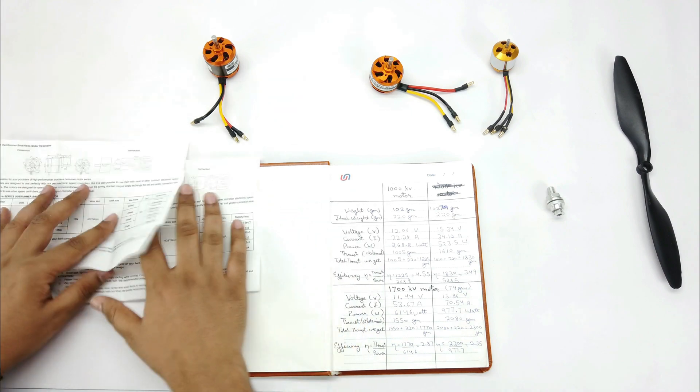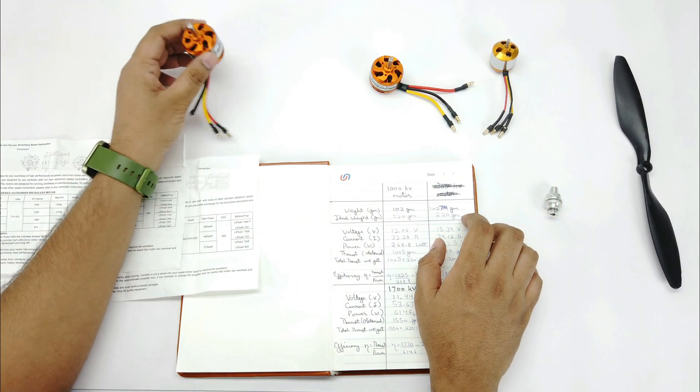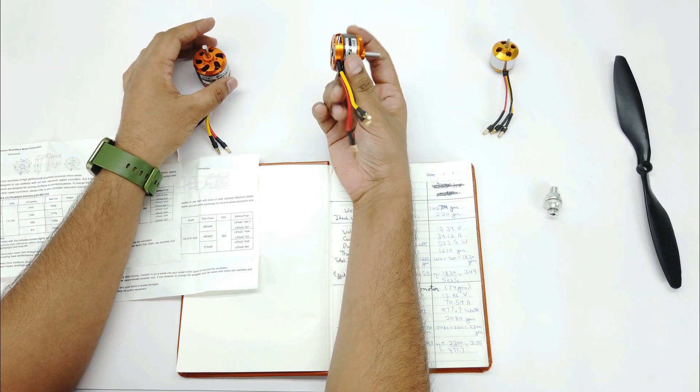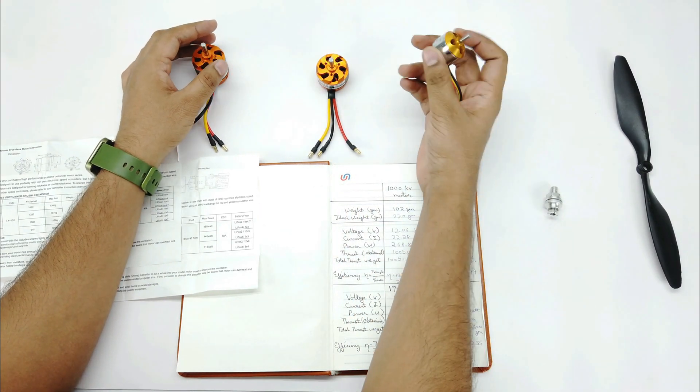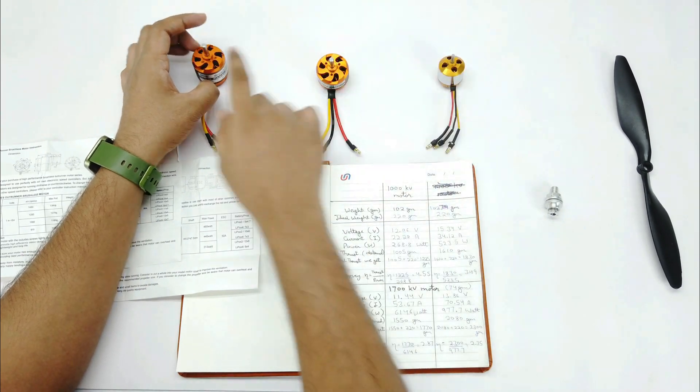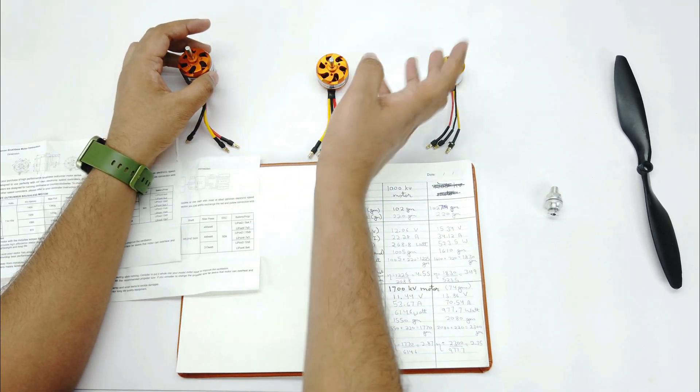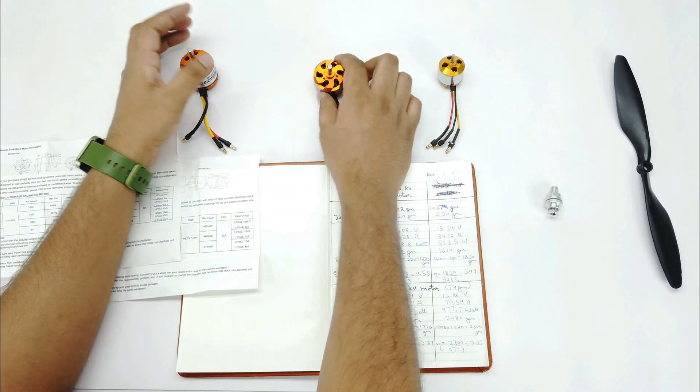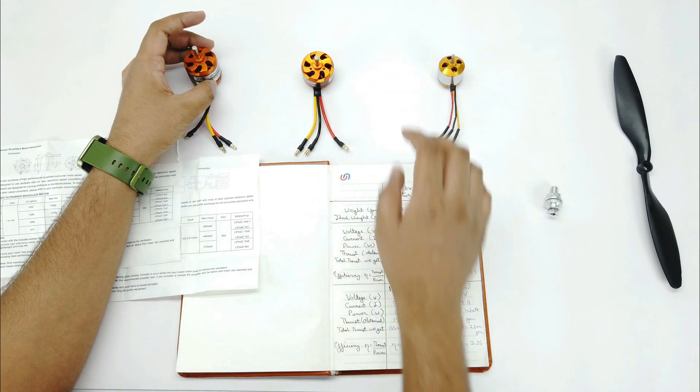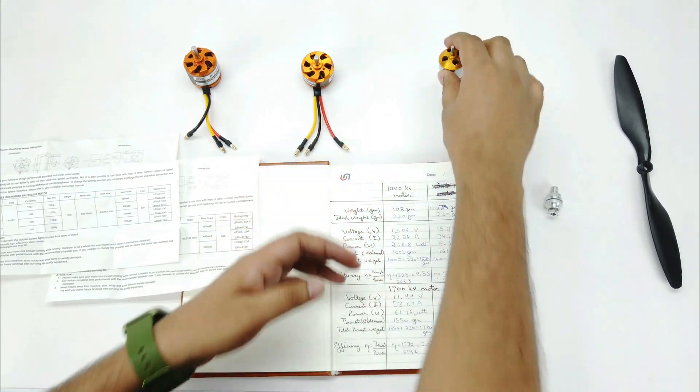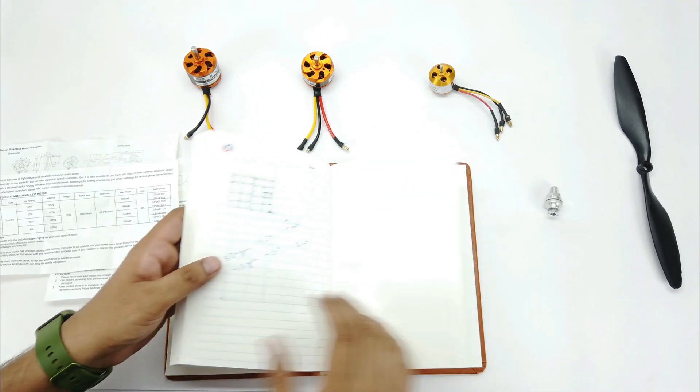Now let's talk about the price. So this costed me around $19 and this one around $17. And this A2212 is approximately $6. You can notice this 1000kV DYS motor as it's approximately 4 times its price. And this 1700kV is almost 3 times more.